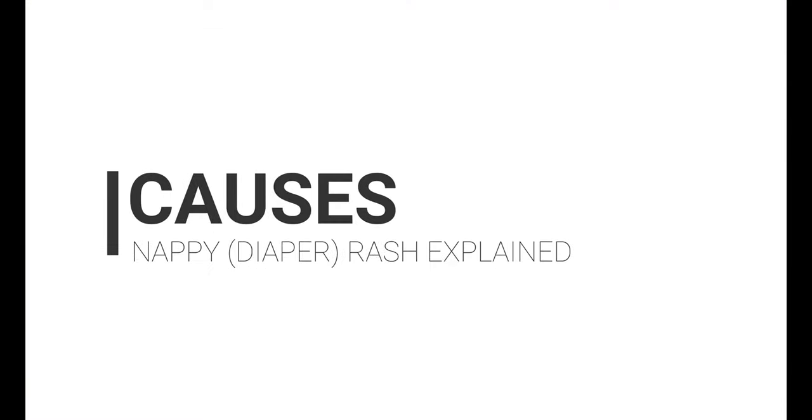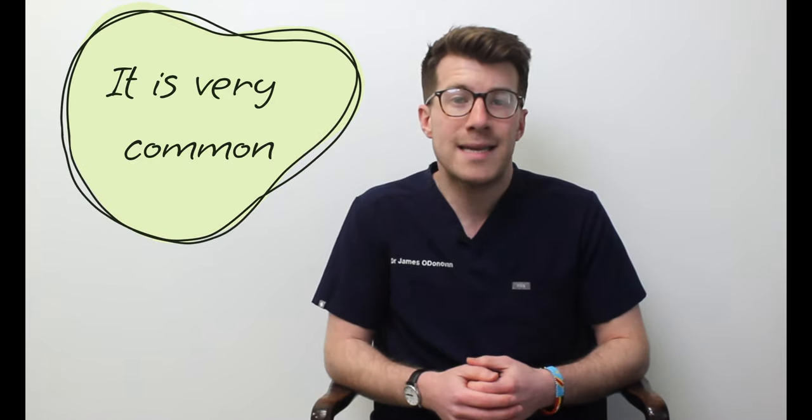So now we know a little bit more about what it looks like. What are the causes of nappy rash? I want to start off by reassuring you that it's normal for babies to sometimes get nappy rash. It can be caused by your baby's skin being in contact with pee or poo for a long time. It can also be caused by not cleaning the nappy area or changing the nappy often enough.